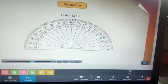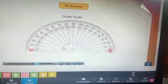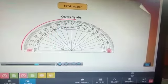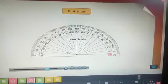One moves anti-clockwise and the other moves anti-clockwise. From the left, if you see 0 to 180, it is the outer scale, and on the right, 0 to 180 is the inner scale.